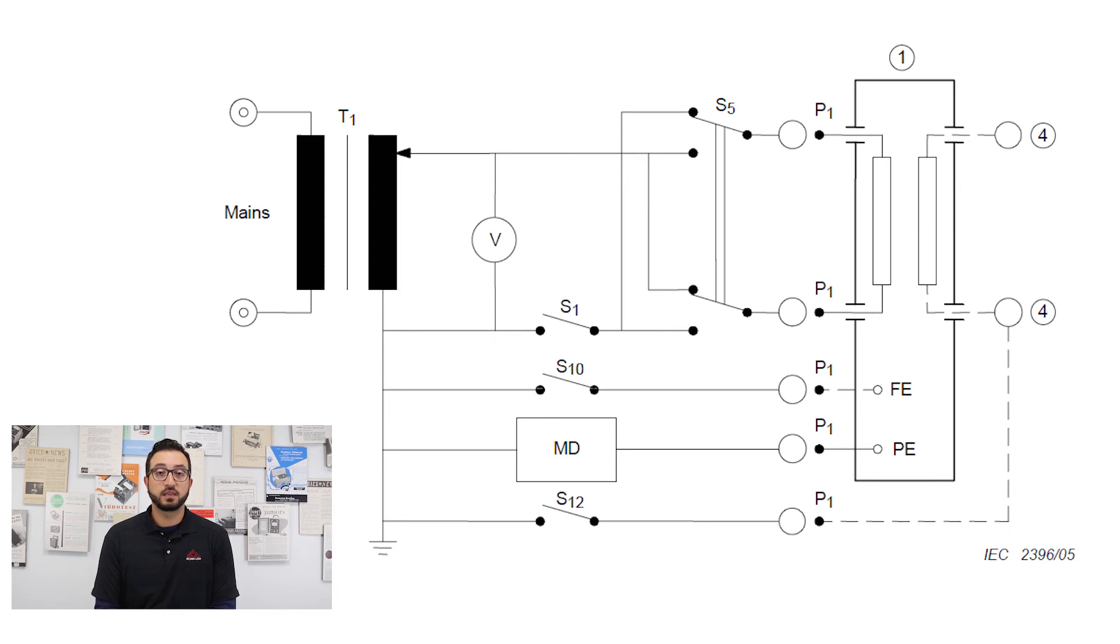In the end, it all comes down to placing the MD circuit, which is the human body impedance that's making the actual leakage current measurement, in the right place. In this case, once again, it's placed between the protectively earthed parts of the device under test and the low or the neutral side of the power supply.